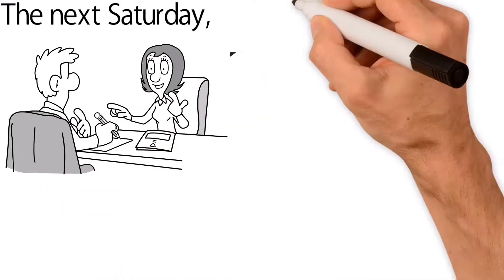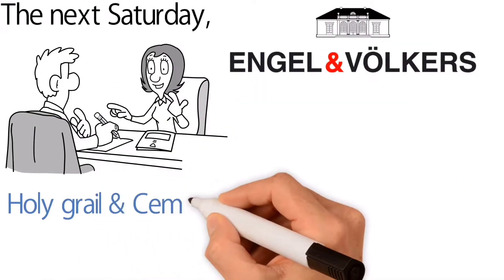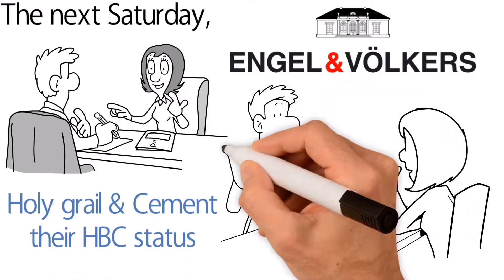They met with Hermione at her England Volcker shop downtown and then headed off to seek the Holy Grail and cement their HBC status. Hermione had done an excellent job of listening to them and Joe was very impressed.